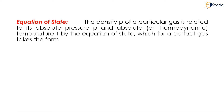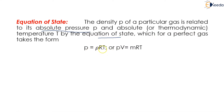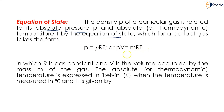The next topic is the equation of state. The density ρ of a particular gas is related to its absolute pressure P and absolute temperature T by the equation of state, which for a perfect gas takes the form P = ρRT, or ρV = mRT, where R is the gas constant and V is the volume occupied by mass m of the gas.